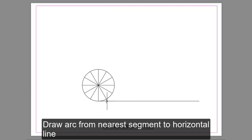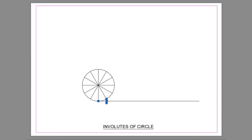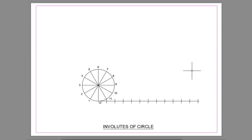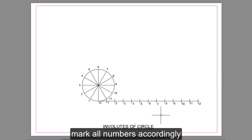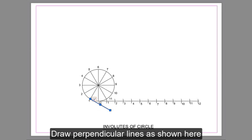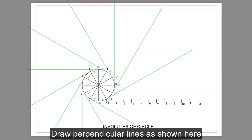Draw an arc from the nearest segment to the horizontal line. Use the same radius arc to place on the horizontal line. Mark all numbers accordingly. Draw a perpendicular line as shown here.